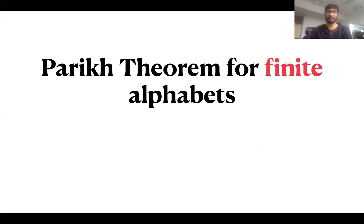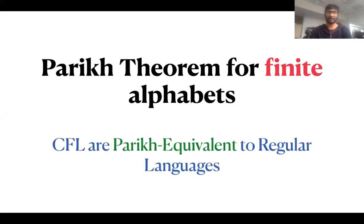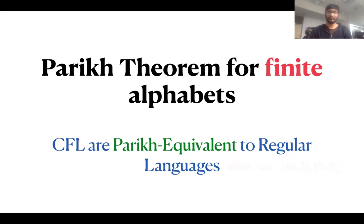First I will recall the classical Parikh theorem for finite alphabets. One of the formulations says context-free languages are Parikh equivalent to regular languages, which means that for every context-free language there is a regular language which has the same Parikh images. A Parikh image is defined for a word as a vector that counts the number of occurrences of each letter in the word. This can be extended naturally to languages. For example, the context-free language a^n b^n is Parikh equivalent to the regular language (ab)*.